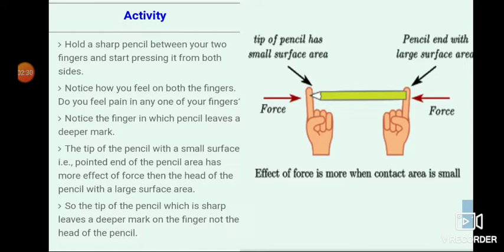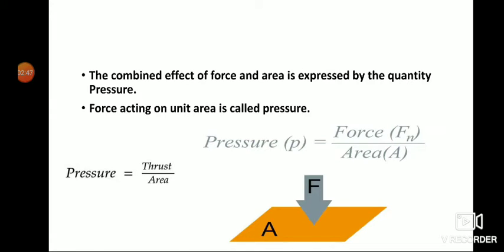This demonstrates the effect of contact area on pressure. More surface area exerts less pressure on the finger, and less surface area exerts more pressure. From this relation it is clear that pressure is proportional to force — more force means more pressure — and pressure is inversely proportional to area, so more contact area means less pressure, and less contact area means more pressure.